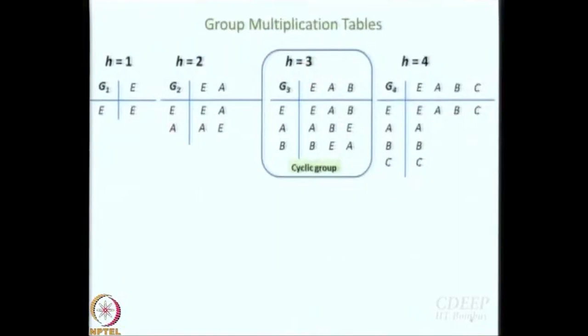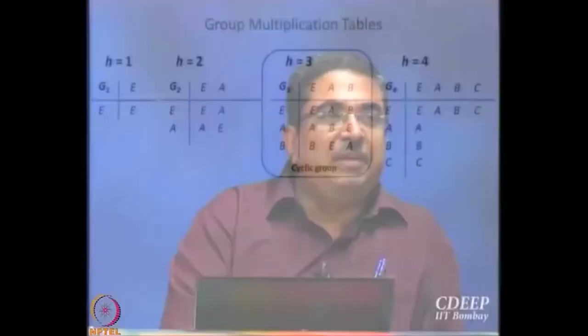We stopped here yesterday at H=4. Let us now do a little bit of Sudoku and work out the group multiplication table of H=4. I have filled in the first row and first column. There are 2 possibilities: one is that it is a cyclic group, and the other is that it is not a cyclic group. I went in the reverse order compared to Cotton's book, but since Cotton is not teaching the class, we will go by my order.